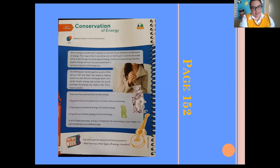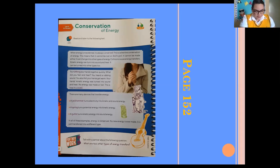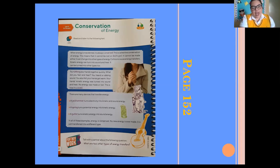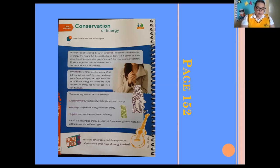There are many devices that transfer energy. A jackhammer turns electricity into kinetic and sound energy. A spring turns potential energy into kinetic energy. A guitar turns kinetic energy into sound energy. In all these examples, energy is conserved — no new energy is ever made. It is just transferred into a different type.